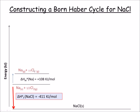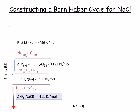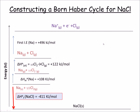We then atomize the chlorine to get one mole of chlorine, which requires 122 kJ/mol. Next, we ionize the sodium — that's governed by the first ionization energy, which requires 496 kJ/mol. We then add an electron onto the chlorine, governed by the first electron affinity of chlorine, which is minus 349 kJ/mol. So now we have our elements in their gaseous and ionic states.